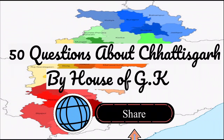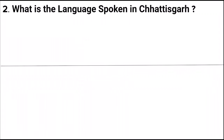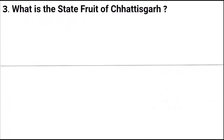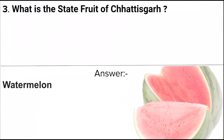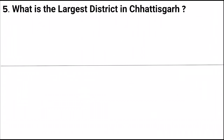Now let's get started. First question: What is the capital of Chhattisgarh? Answer: Raipur. Next question: What is the language spoken in Chhattisgarh? Answer: Chhattisgarhi. Next question: What is the state fruit of Chhattisgarh? Answer: Watermelon. Next question: What are the total number of districts in Chhattisgarh? Answer: 28 districts.